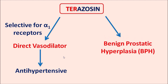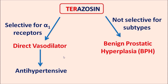Terazosin is not selective for subtypes of alpha-1 receptors. We have drugs like Tamsulosin, which is a selective alpha-1A receptor blocker, also indicated for the treatment of benign prostatic hyperplasia.